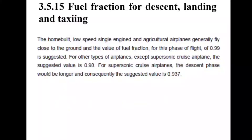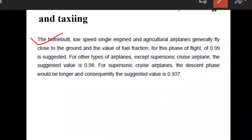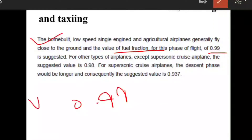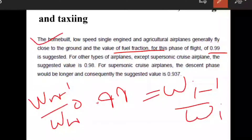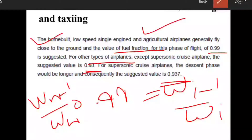Now let's look at fuel fraction for descent, landing, and taxi operations. For homebuilt low-speed single-engine or agricultural airplanes that fly close to the ground, the fuel fraction is approximately 0.99. For most other airplane types — except supersonic cruise airplanes — the suggested fuel fraction is 0.98. For supersonic cruise airplanes, the descent would be longer, so the suggested value is 0.937. These are typical values — one-mark questions in GATE exams may ask for these.